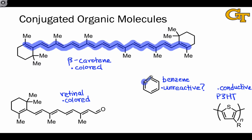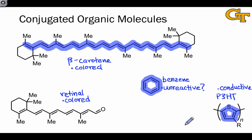Benzene is particularly unique because it's a cyclic conjugated system, and in fact the same is true of the thiophene molecule within poly-3-hexylthiophene. In this lesson, we're going to look at the structures of delocalized pi systems and their reactivity to help explain some of these properties, such as their color, their lack of reactivity under normal conditions that engage alkenes, and their conductive properties.